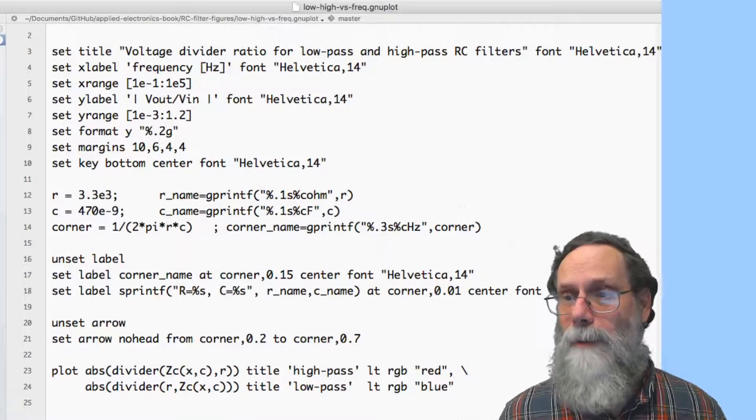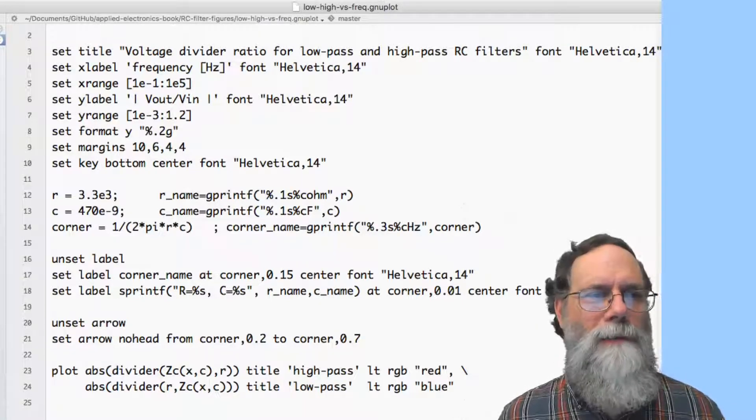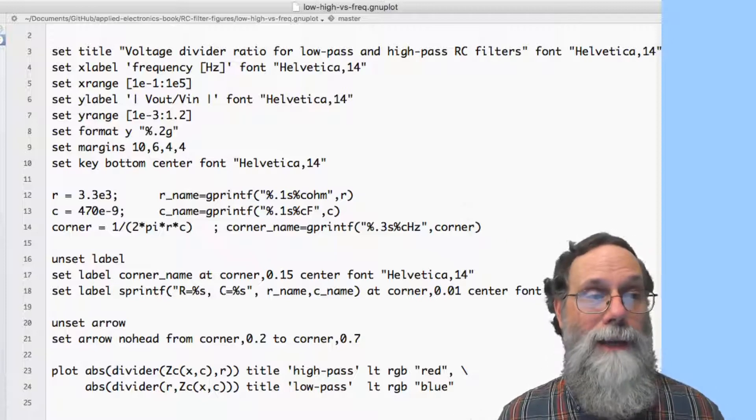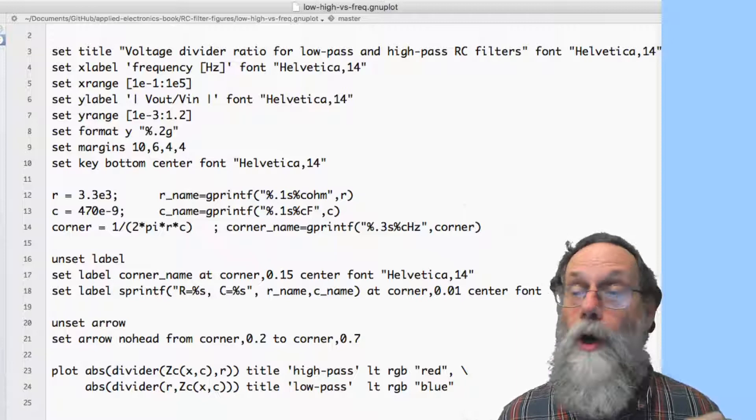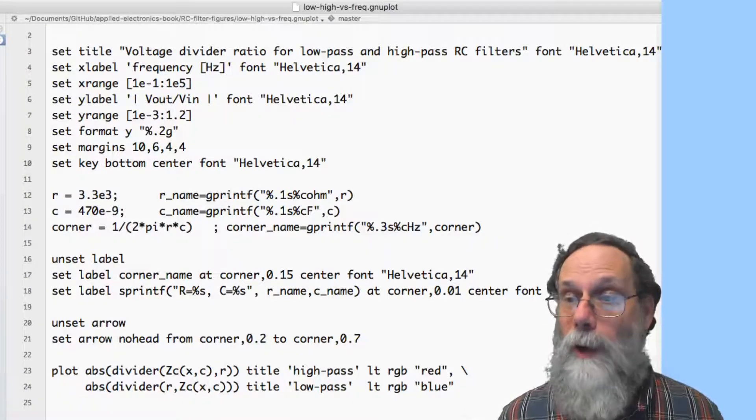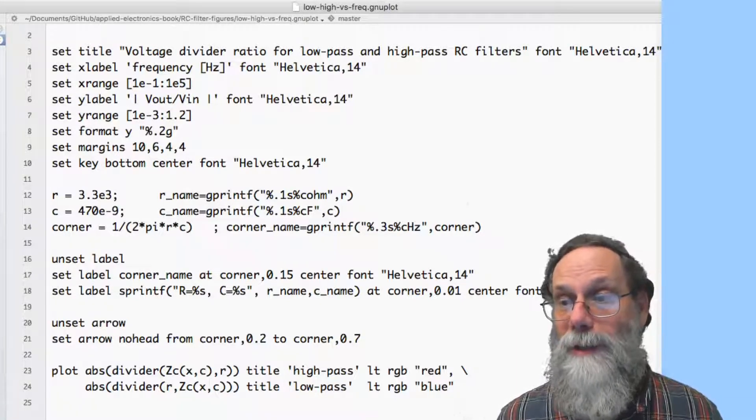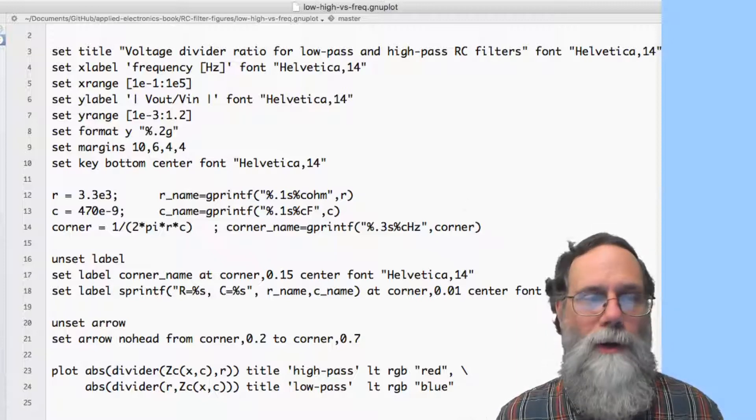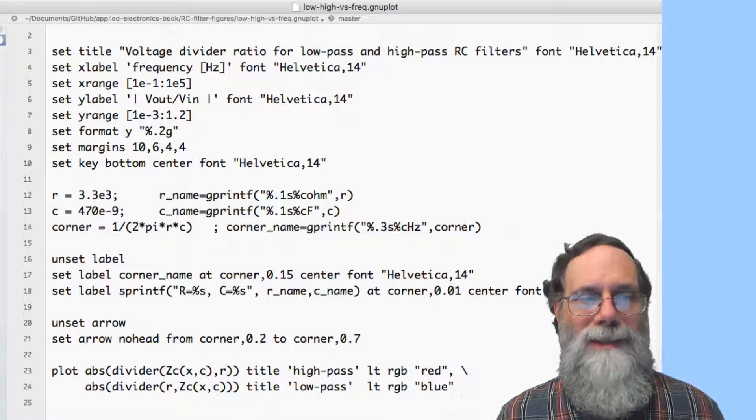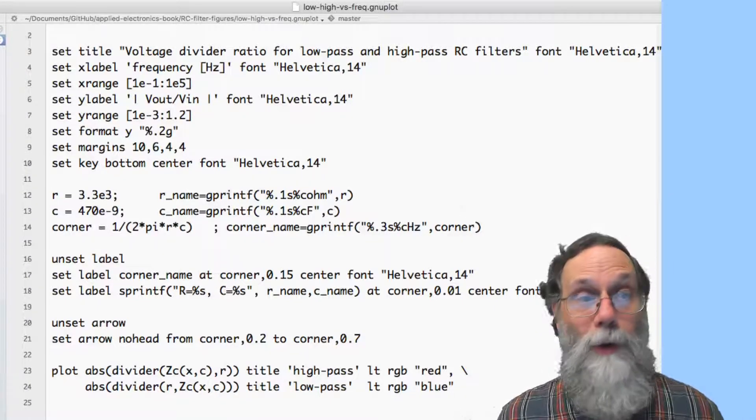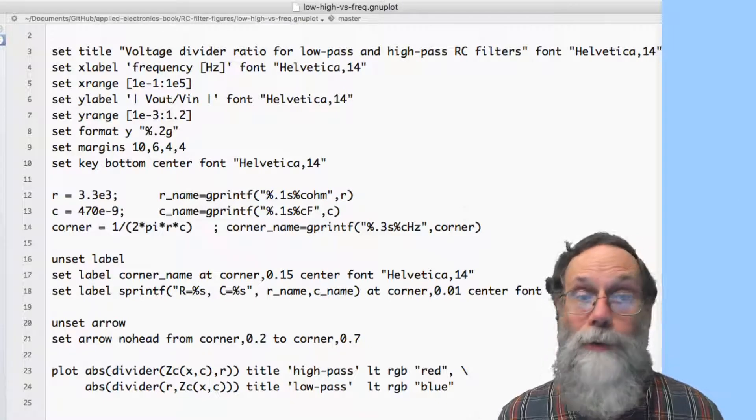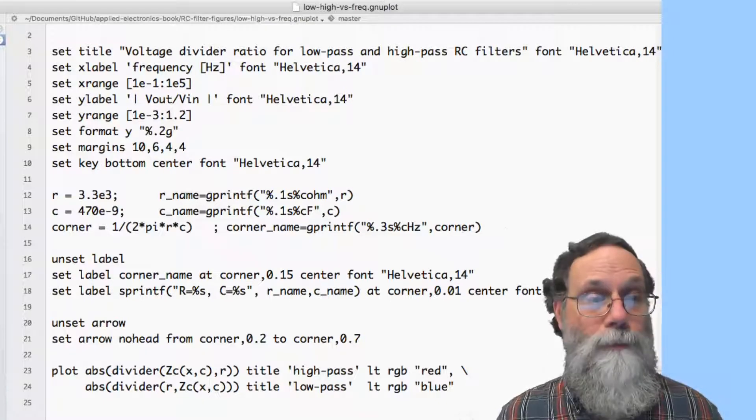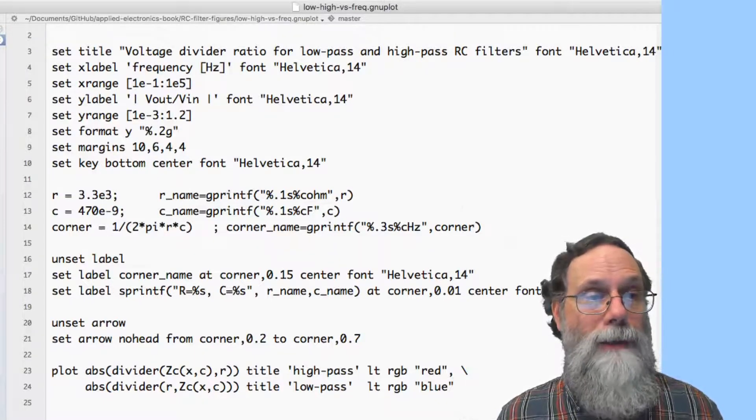I'm also going to have an arrow. Well, it's not really an arrow. First, I get rid of any old arrows that might have been floating around from previous attempts to run the script. Then I do set arrow no head. An arrow with no heads is just a line. So the way you draw a line segment that's an annotation to your graph is set arrow no head. And then I say from corner frequency 0.2 to corner frequency 0.7. So that's vertical line from 0.2 to 0.7 at the corner frequency.